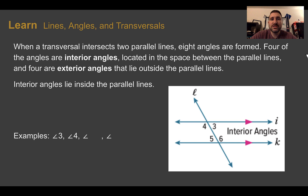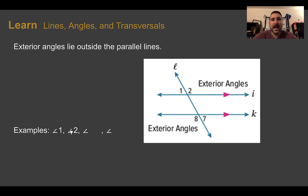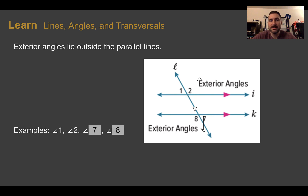When a transversal intersects two parallel lines, eight angles are formed. Four of the angles are interior angles — angles three, four, five, and six — because they are between or inside the parallel lines. Exterior angles are outside the two parallel lines: angles one, two, seven, and eight. Those are the angles on the transversal that are outside of the parallel lines.